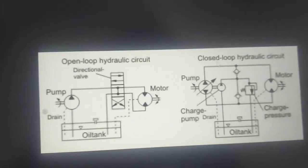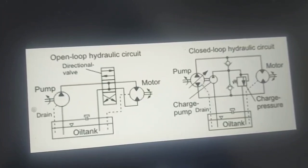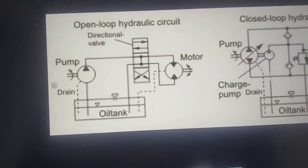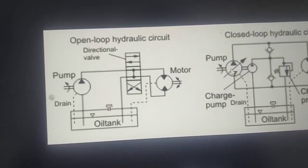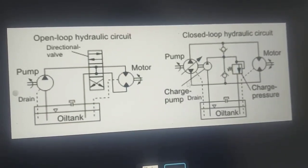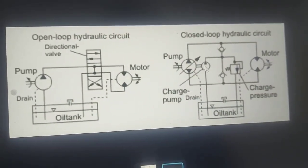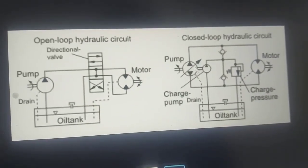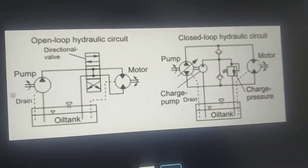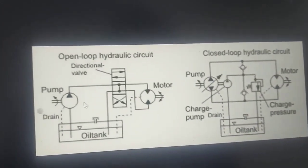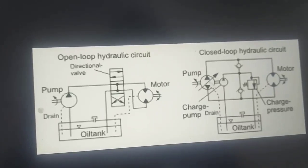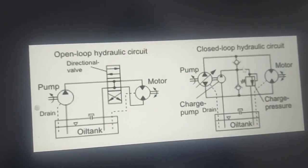In the closed loop circuit, we have an additional charge pump — a small charge pump. This charge pump is located inside the main hydraulic pump. First, it sucks oil from the tank and supplies it to the main pump. Oil then flows to the hydraulic motor, and from the hydraulic motor it goes back again to the pump. In open loop, oil goes back to the tank, but in closed loop, it goes back to the pump — this is the main difference.